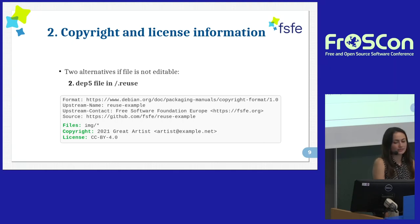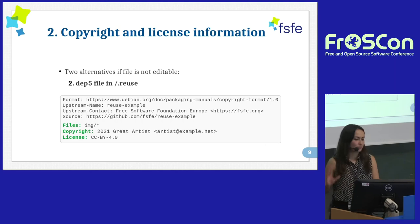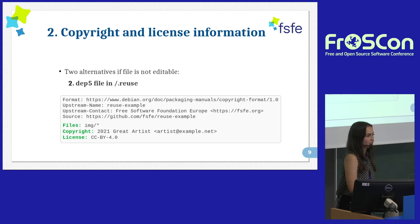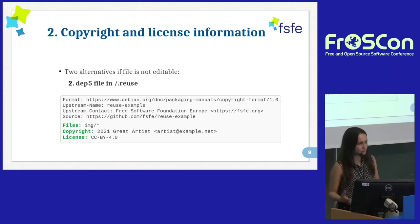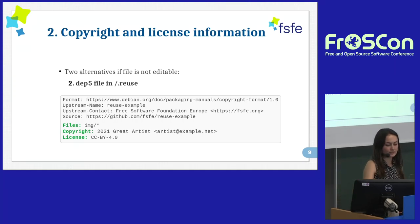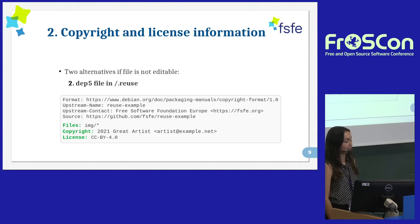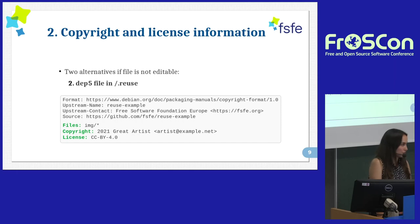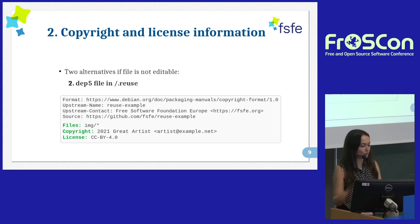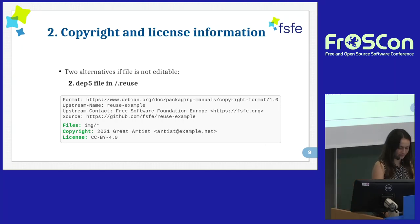But if you have 1,000 pictures, creating 1,000 separate files might be a hassle and would also double the size of the project. So we have an alternative: the DEP5 file stored in a directory called .reuse. The DEP5 file is a Debian project format — again integrating existing practices. In this case, you can select a whole directory, and tell the tool that the whole directory of images is under a certain license and that the copyright holder is a specific person. The downside is you might overlook pictures with different rights, so only use it when you're 100% sure.